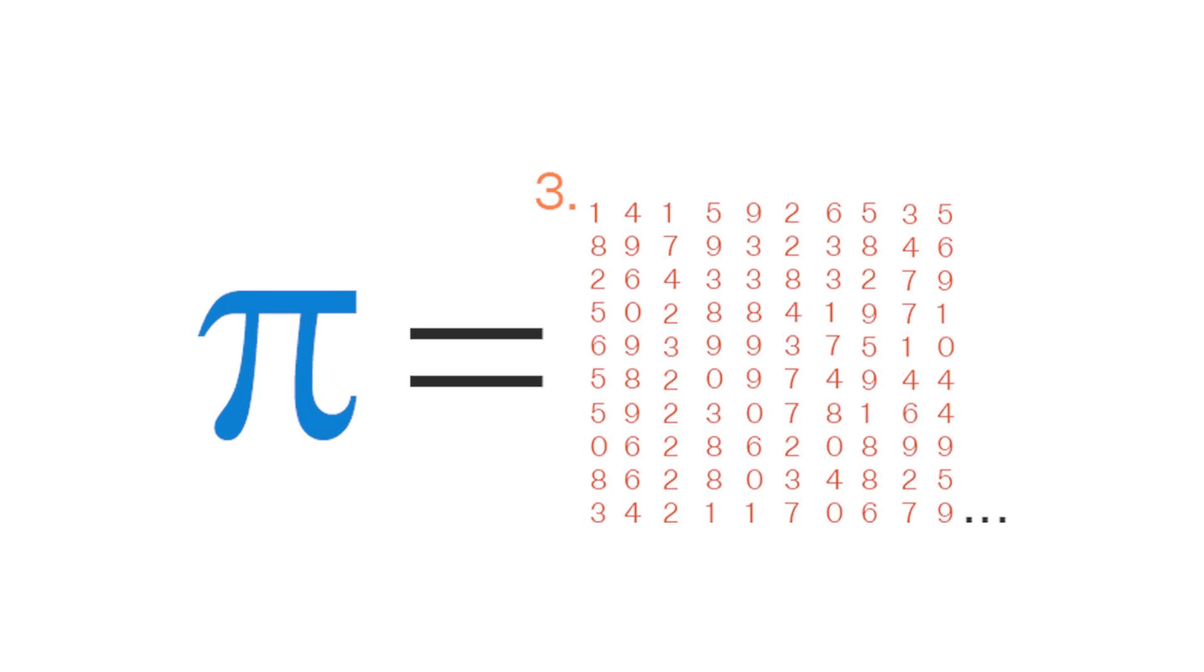Pi is used extensively in mathematics, physics, engineering, and many other scientific fields to calculate the properties of circles, spheres, and other circular or spherical objects. It is an irrational number, meaning its decimal representation never ends or repeats.